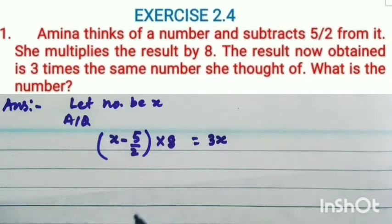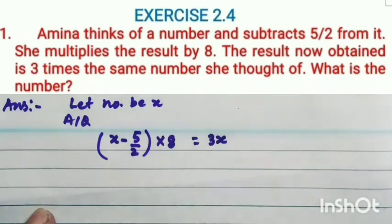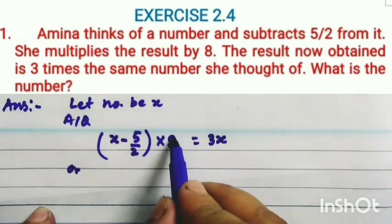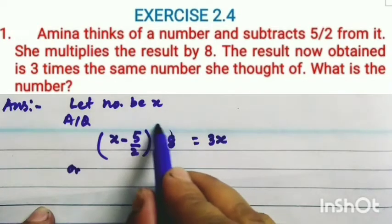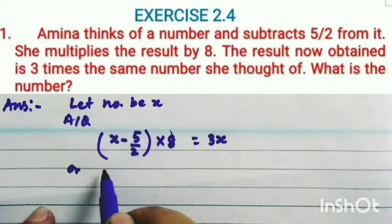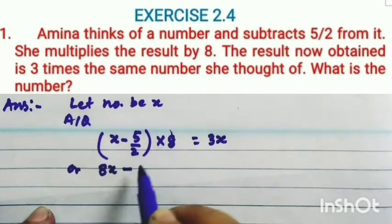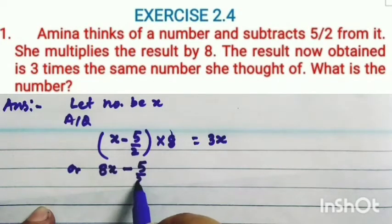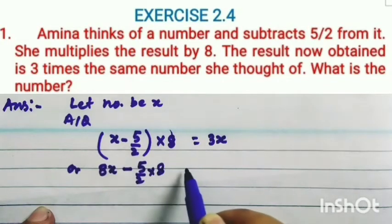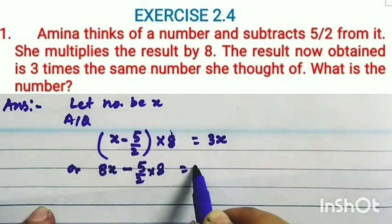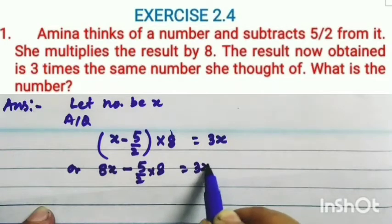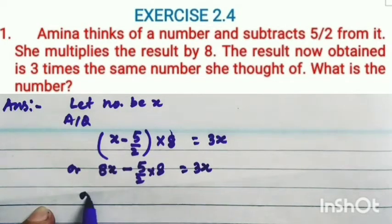What is the number? This is the equation. Now you have to multiply 8 into (x minus 5 by 2), which gives 8 into (x minus 5 by 2) equal to 3x.